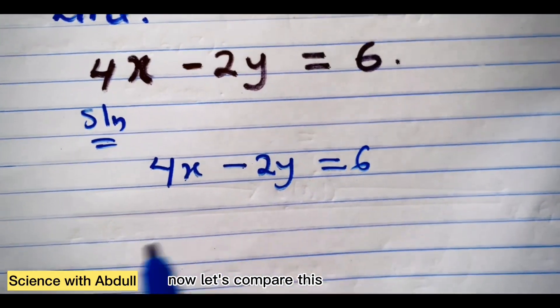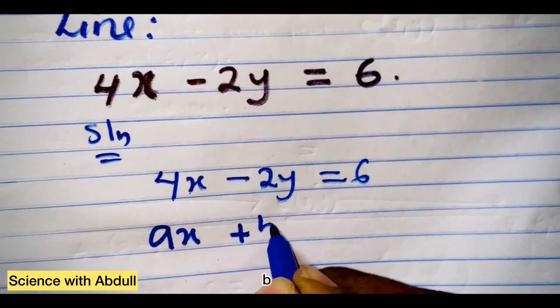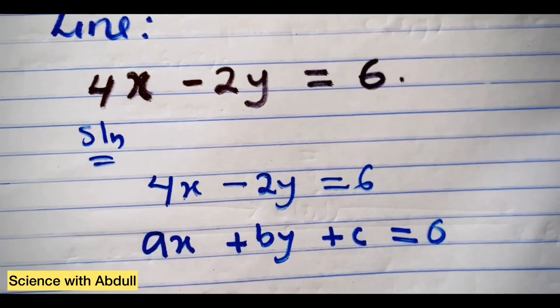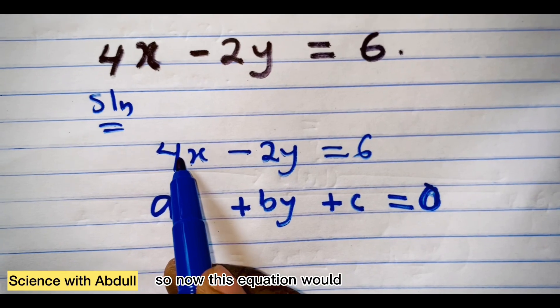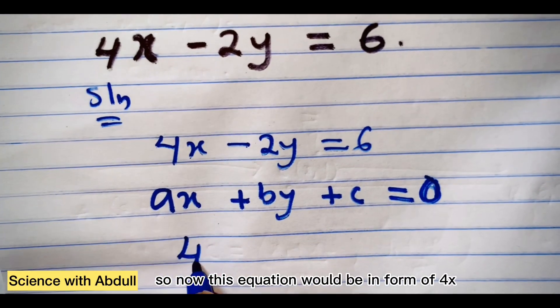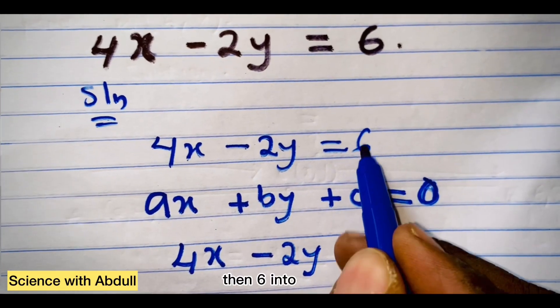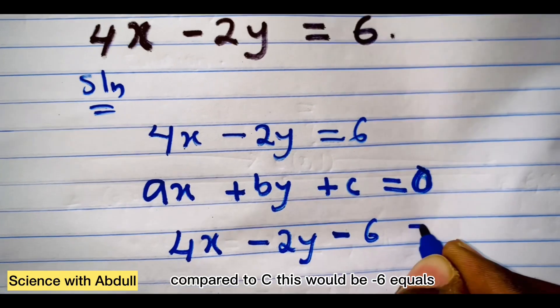Now let's compare this with this equation ax plus by plus c equals to 0. So now this equation would be in the form of 4x minus 2y, then 6 into the equality sign compared to c. This would be negative 6 equals to 0.